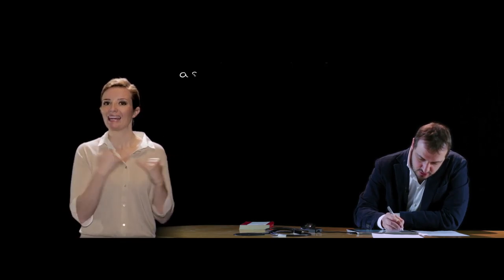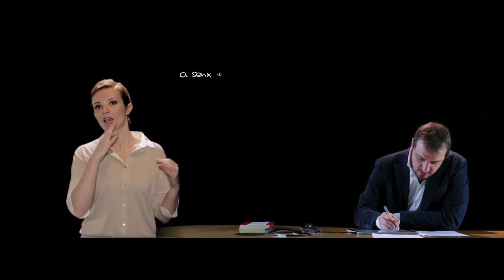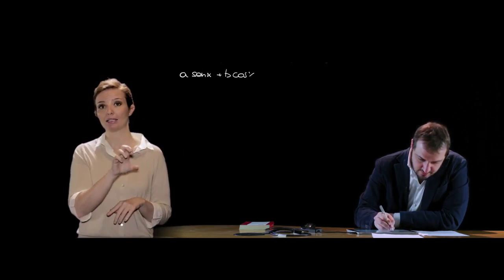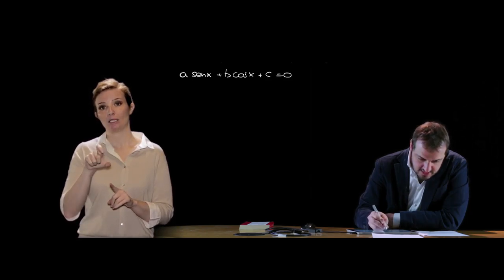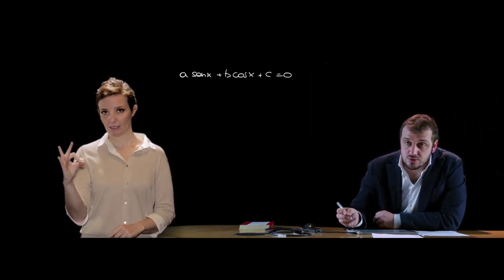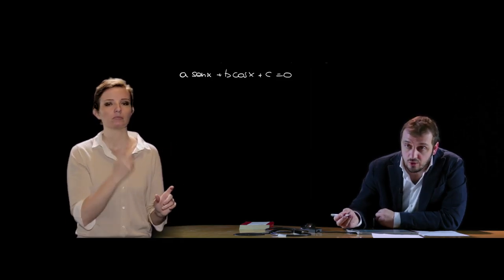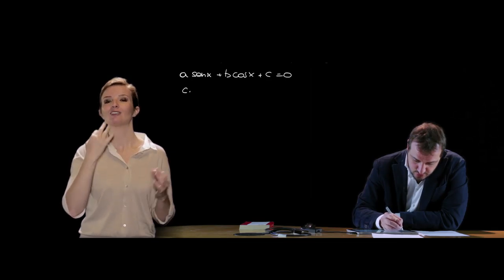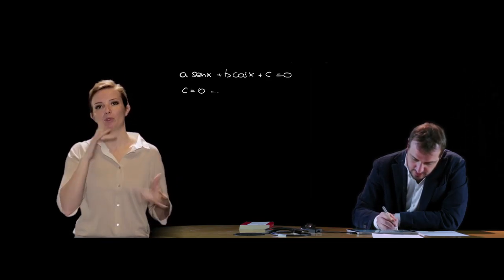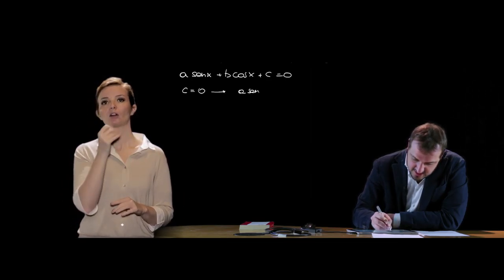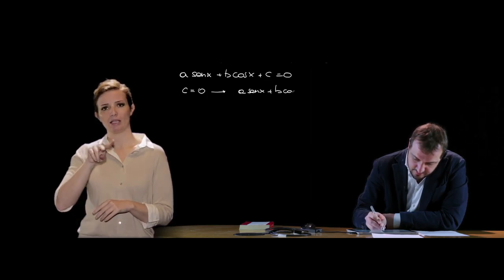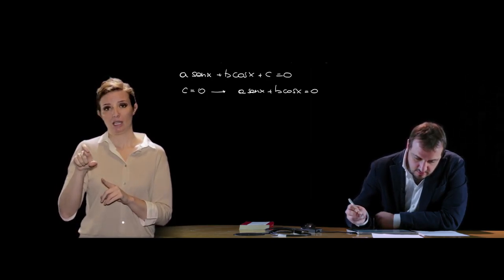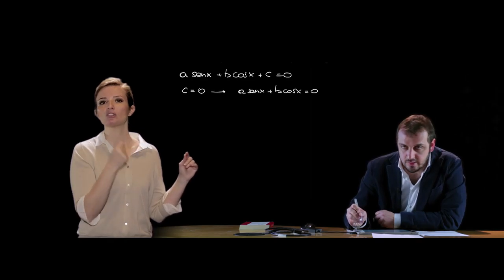Un po' più complicate sono le equazioni lineari in seno e coseno, del tipo a·sen x + b·cos x + c = 0, dove figurano esclusivamente seno e coseno di primo grado. Nel caso più semplice, c = 0, l'equazione a·sen x + b·cos x = 0 è un'equazione omogenea di primo grado.